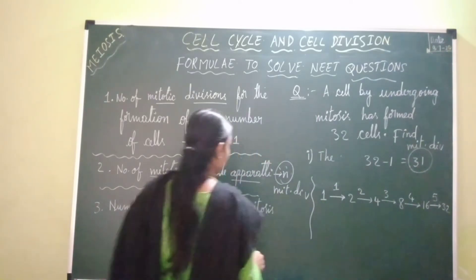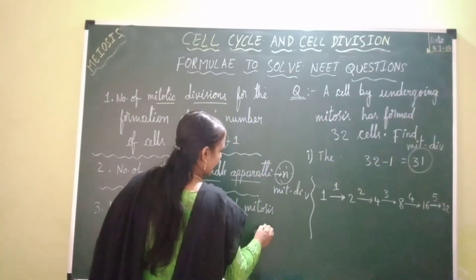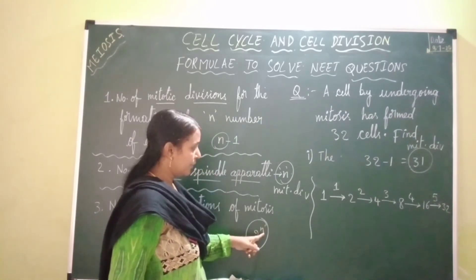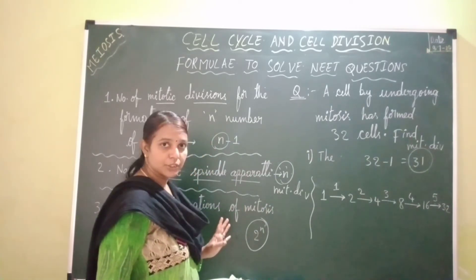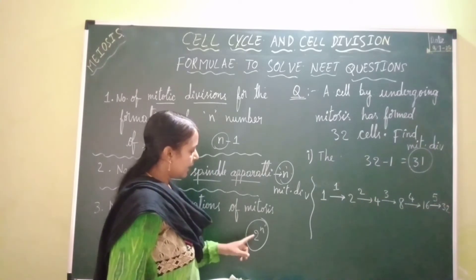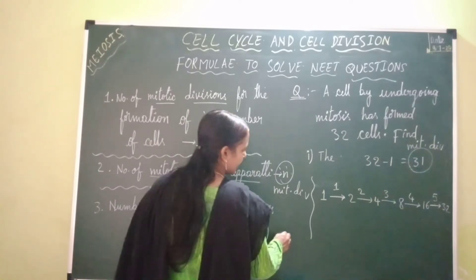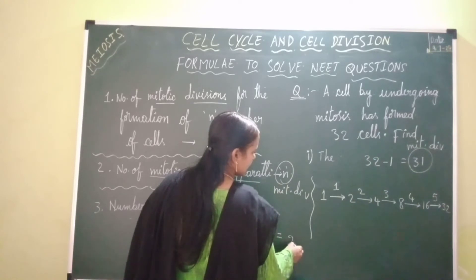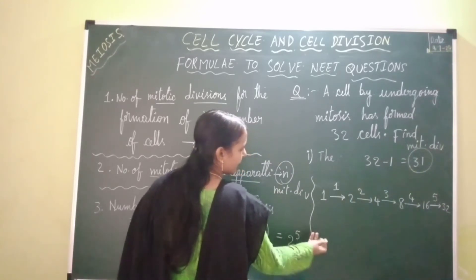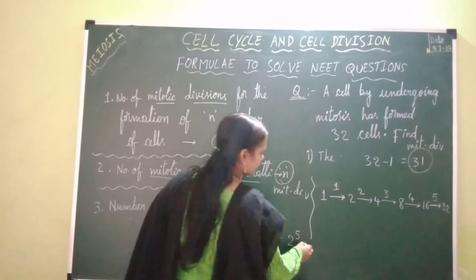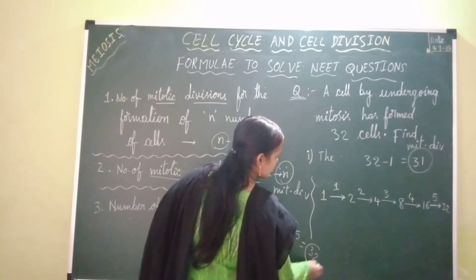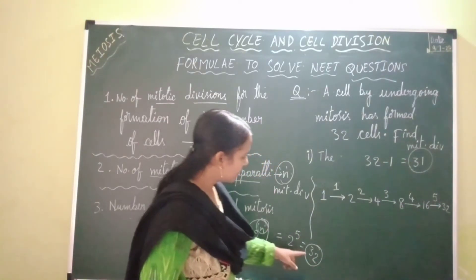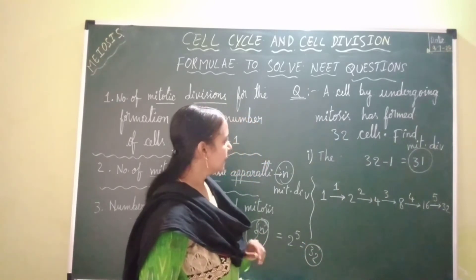The number of generations uses the formula 2 to the power n, where n equals the number of generations. Here there are five generations. Using this formula we can also get the total number of cells formed: 2 to the power 5 equals 32. So total number of cells equals 2^n, where n is the number of generations.